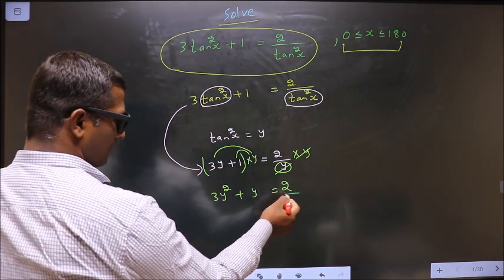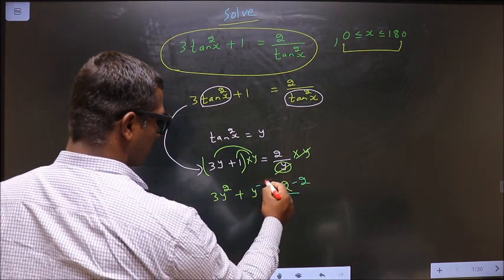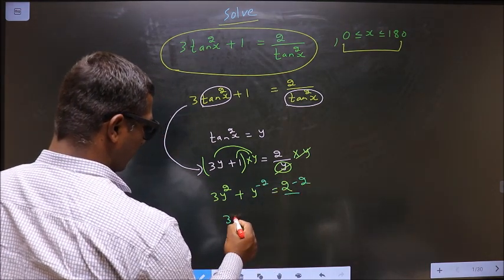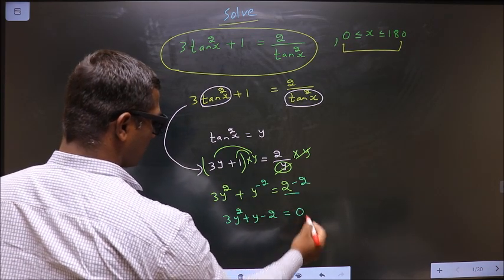Now bring this 2 to the other side. For that you subtract 2 on both sides. So we get 3y square plus y minus 2 equal to 0.